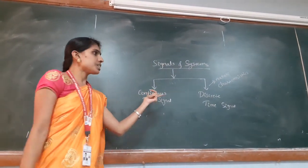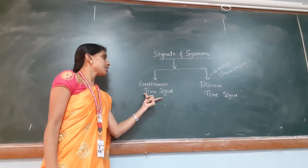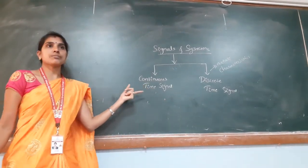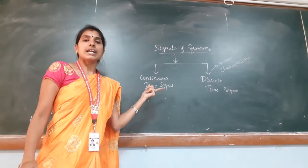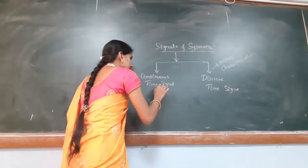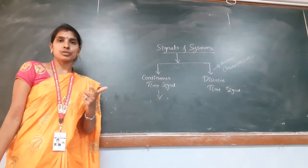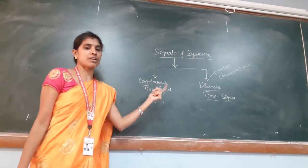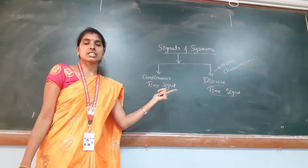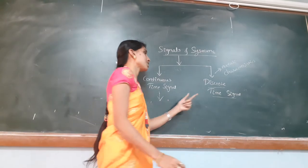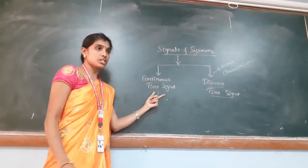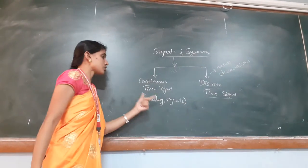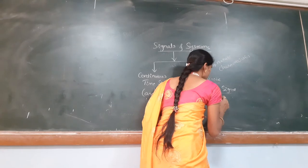Coming to the continuous time signal, the signal which is defined for every instant of time is called a continuous time signal. In a continuous time signal, both amplitude and time are in a continuous manner. The discrete time signal is defined only at discrete time intervals at the time instant T. Continuous time signals are also called analog signals, and discrete time signals are also called digital signals.